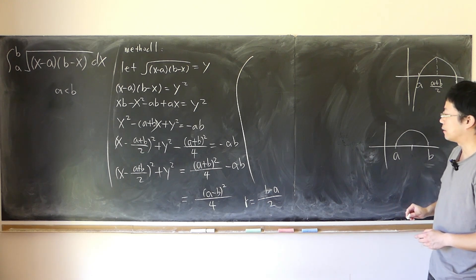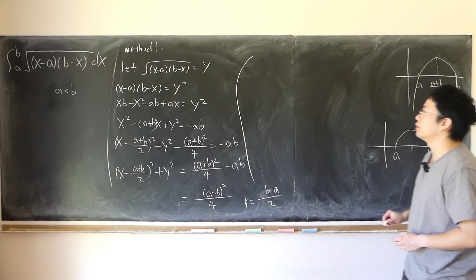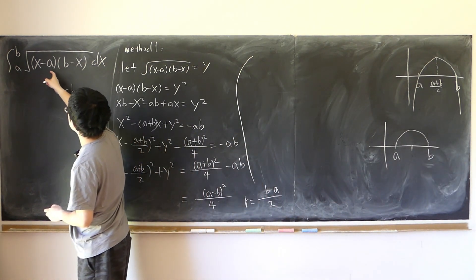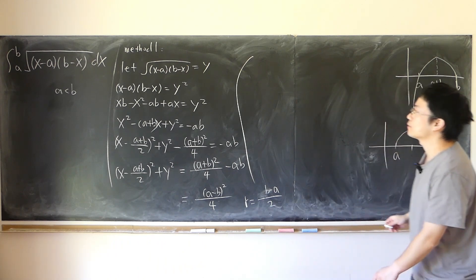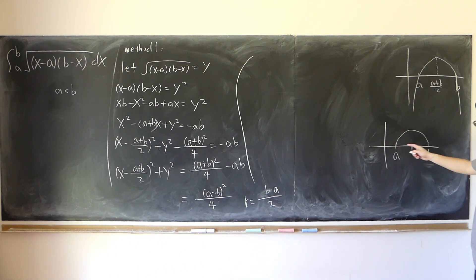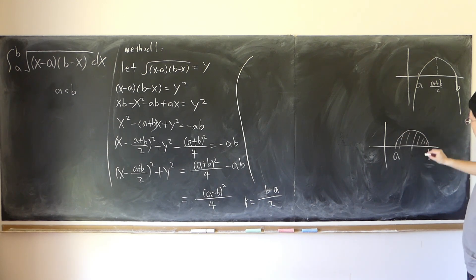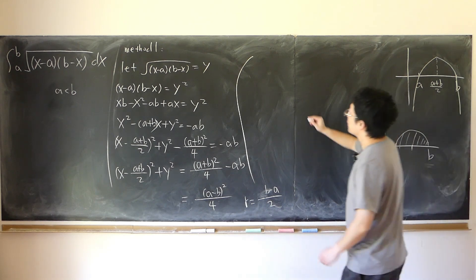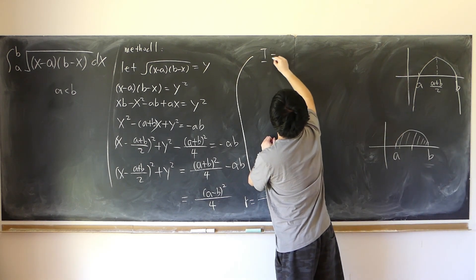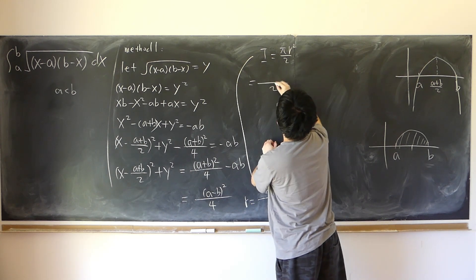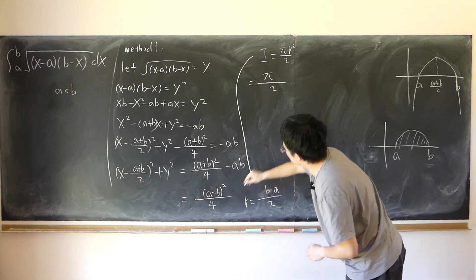We only take the positive square root, which is the upper semicircle above the x-axis. So the definite integral represents the area of a semicircle, which is half of π r squared. With r² equal to (a minus b)²/4, that gives π(a minus b)²/8.